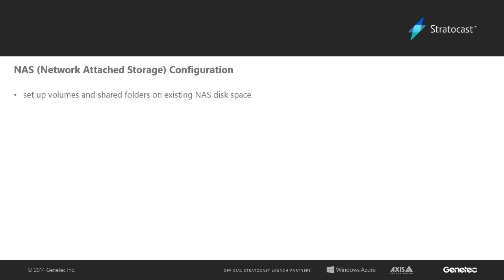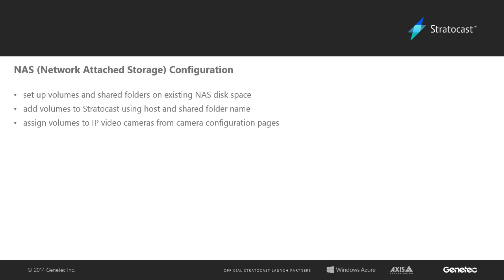After the volumes have been set up on the device, we can add them to Stratocast and then assign them to IP cameras. When creating the volumes on the device and in Stratocast, we can set up a user name and password and assign specific user permissions. This allows more control over who can access the video files on the NAS device.